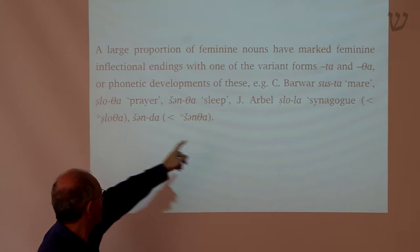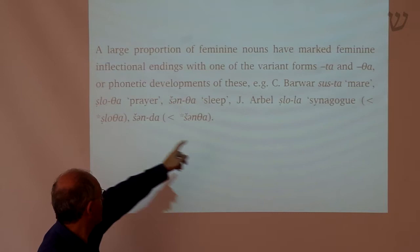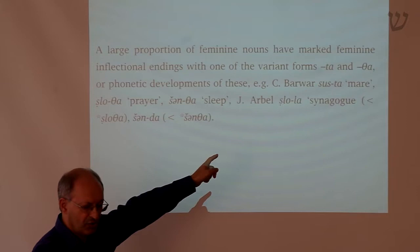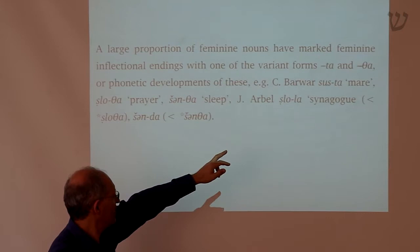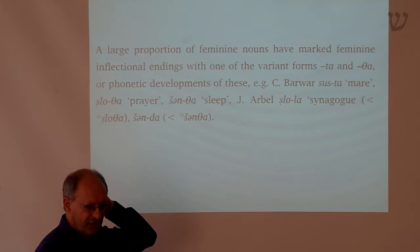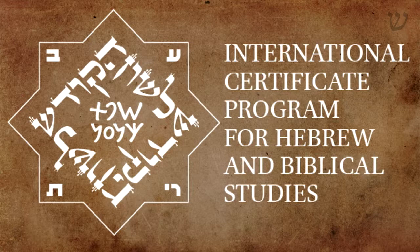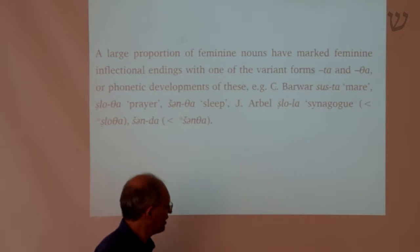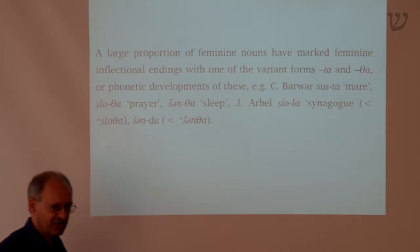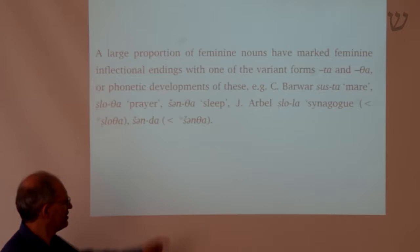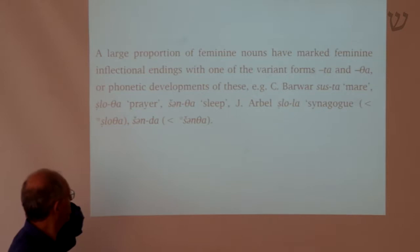The feminine endings are forms like 'ta' or 'tha'. So 'susta' means 'female horse' or 'mare' in Barawa. 'Slotha' is 'prayer', 'shintha' is 'sleep' — so you have these variant forms 'ta' or 'tha'. In some dialects which don't have the interdental 'tha', such as the trans-Zab dialects like Jewish Arbel, this 'tha' would shift to 'la'. There was this interesting sound shift of interdental 'tha' to 'la', so 'slotha' would become 'slola', the word for synagogue.